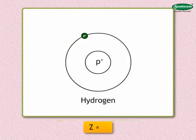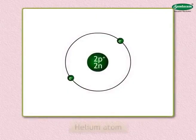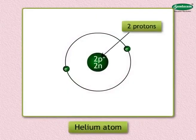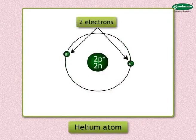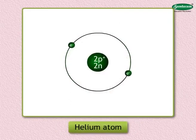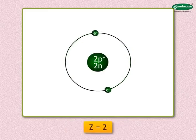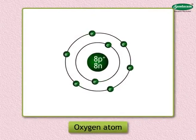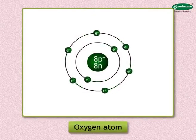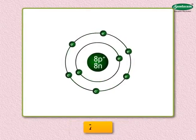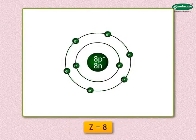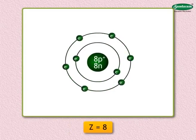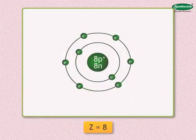The hydrogen nucleus has only one proton, around which revolves one electron, so its atomic number Z = 1. In the helium atom there are two protons, two neutrons, and two electrons revolving in the orbit, so its atomic number Z = 2. Looking at the figure, the atomic number of the oxygen atom is Z = 6.